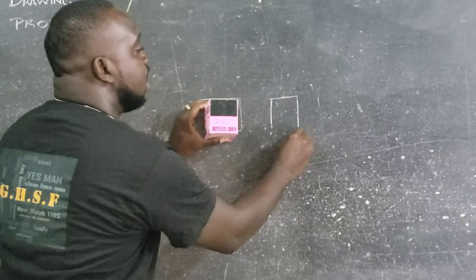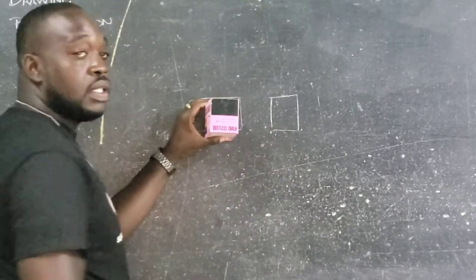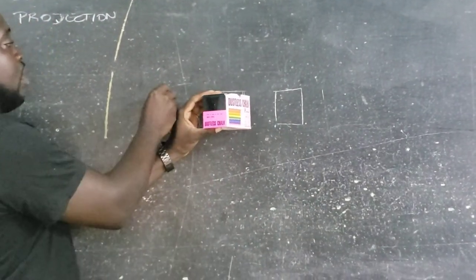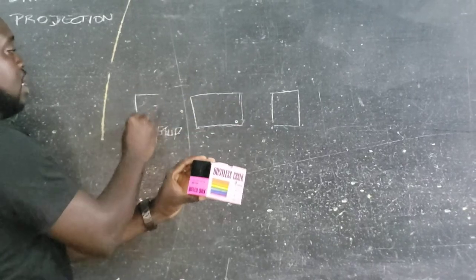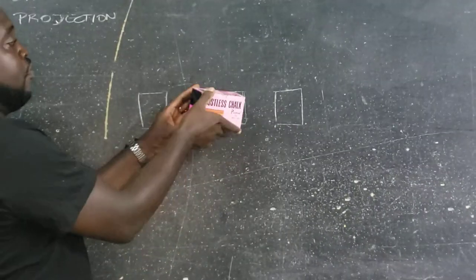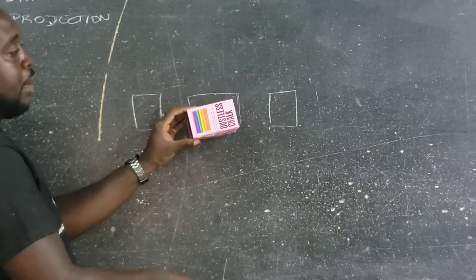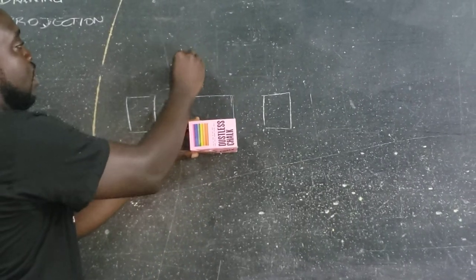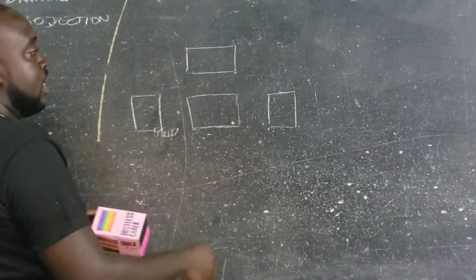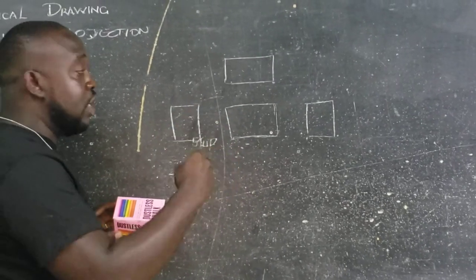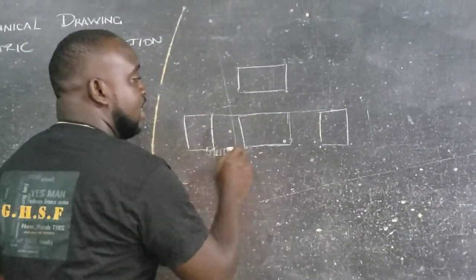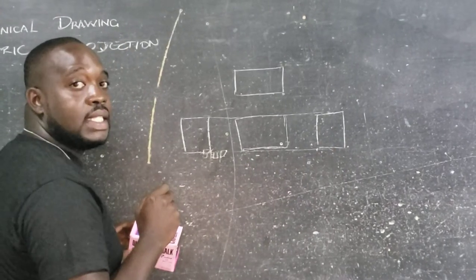Now notice that the measurements are different. And if we should view the opposite side, this is what we will actually see — similar to that side. And if viewed from the top, we will go ahead and draw. Notice how the objects actually correlate. These are similar in height; all elevations are similar in height.